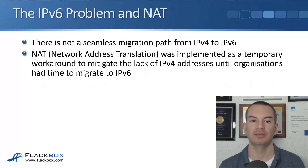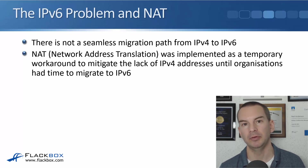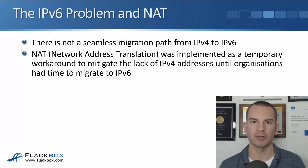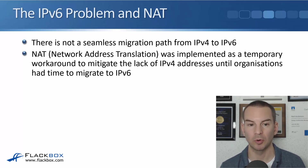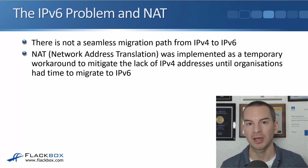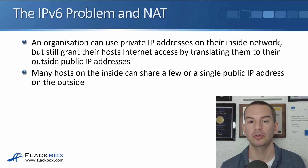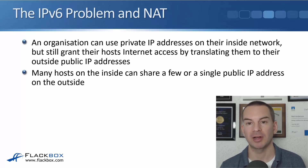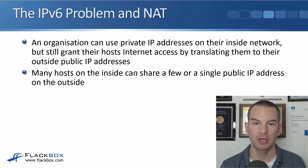But a problem is that there's not a seamless migration path from IPv4 to IPv6. IPv6 is not backwards compatible with IPv4, so there's not an easy way to change from one to the other. So NAT — Network Address Translation — was implemented as a temporary workaround to mitigate the lack of IPv4 addresses until organizations had time to migrate to IPv6. The original idea was that NAT would just be temporary, but it's actually turned out to be more of a long-term solution in the real world. An organization can use private IP addresses on their inside network when using NAT, but still grant their hosts internet access by translating them to their outside public IP addresses — that's the translation.